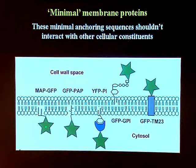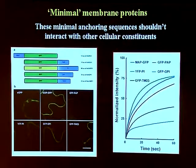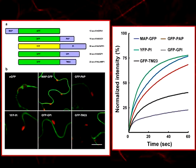We have myristoylated GFP, prenylated GFP, GPI, and a single transmembrane domain — five different minimal proteins that all target the plasma membrane properly — and they still exhibit a range of different movement characteristics within the membrane. YFP-PI moves fairly quickly, while GFP-GPI doesn't move very quickly at all. So it's not protein-protein association that's causing GFP-GPI to remain immobilized within the membrane. So what else might it be?